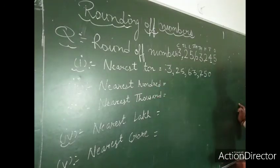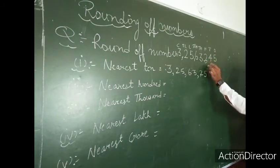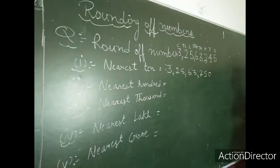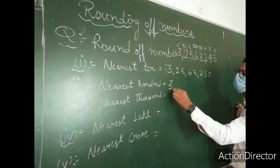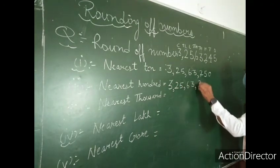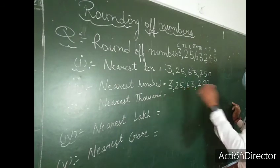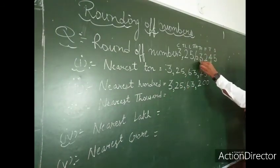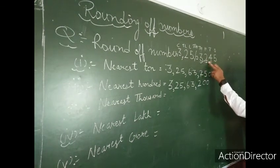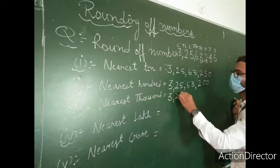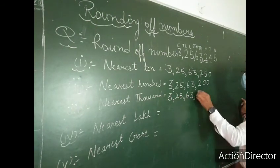For nearest 100, the digit in the hundreds place is 2, and the right-hand side digit is 4. Since 4 is smaller than 5, we write 2 as it is and replace the digits to the right with 0. Result: 3,25,63,200. For nearest 1000, the digit in the thousands place is 3, and the right-hand side digit is 2. Since 2 is smaller than 5, we write 3 as it is and replace the digits to the right with 0. Result: 3,25,63,000.